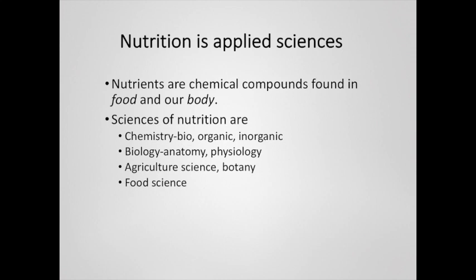It is also an agricultural science because it encompasses the concepts of farming and plant physiology like botany. And it's a food science because it takes specific considerations to determine the types of nutrition available from foods and also ways to prepare food that maximize the nutritional potential of it.